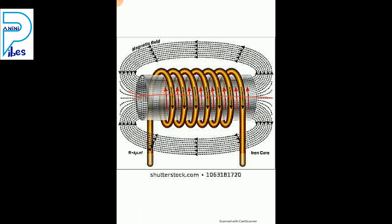The straight lines in the middle of the solenoid are parallel to each other. These straight lines move from south pole to north pole inside the solenoid. So the direction of magnetic field lines inside the solenoid is south to north pole, and outside the solenoid the direction is north to south pole.